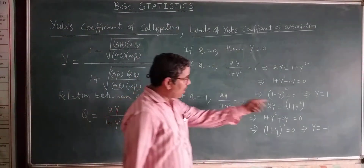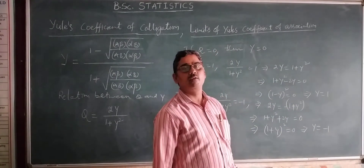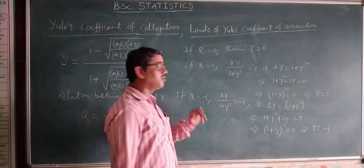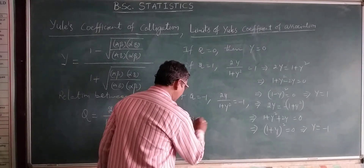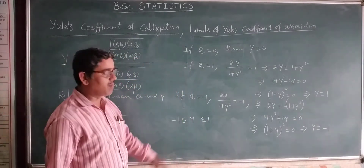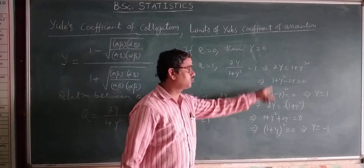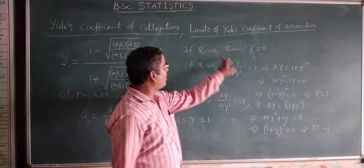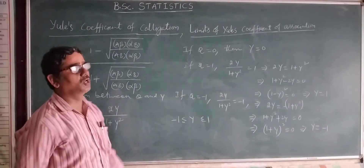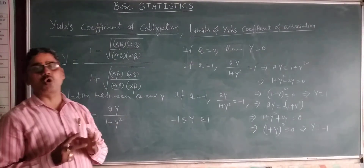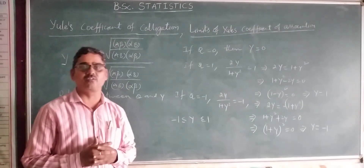Therefore, the lower limit is minus 1 and the upper limit is plus 1, obtained from Q equals 1 and Q equals minus 1 respectively. Also, when Q equals 0, Y equals 0. So Y lies between minus 1 and plus 1, that is, minus 1 less than or equal to Y less than or equal to plus 1. These are the limits of Yule's coefficient of colligation. Thank you.